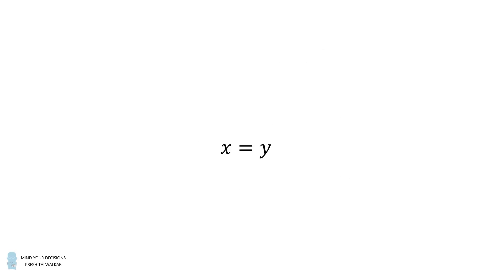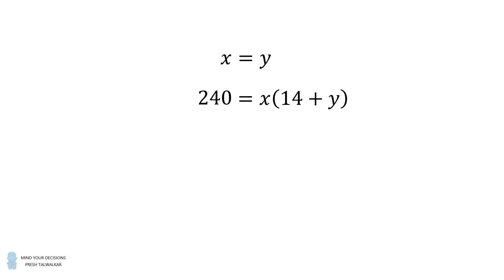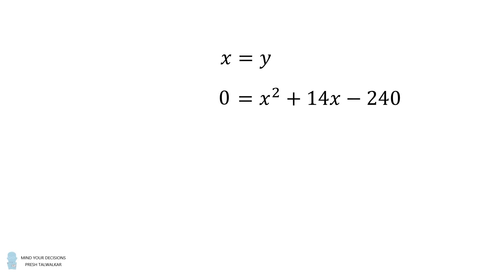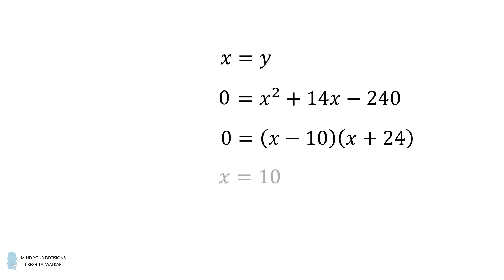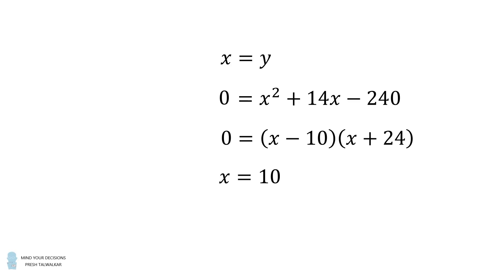From here, we will substitute back into the first equation. We have X equals Y, so we'll substitute for Y. Then we will distribute to get a quadratic equation. We'll subtract 240 from both sides and factor this equation. We get the two linear terms X minus 10 and X plus 24. This means X equals 10 and X equals negative 24 are solutions. Since X is a length, we want X to be greater than or equal to 0, so we eliminate the negative solution. Therefore, X equals 10, which means Y equals 10 as well.